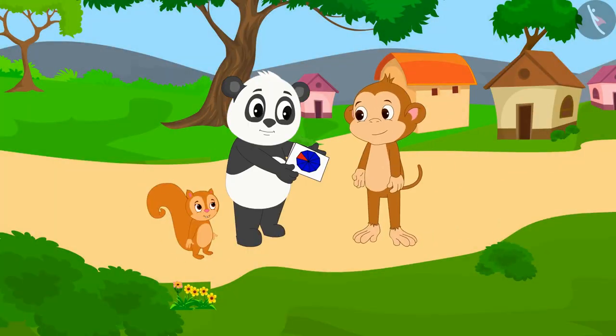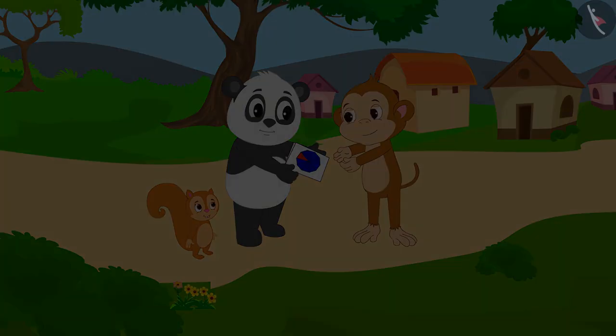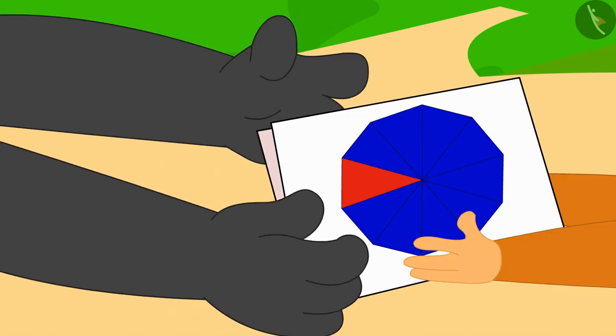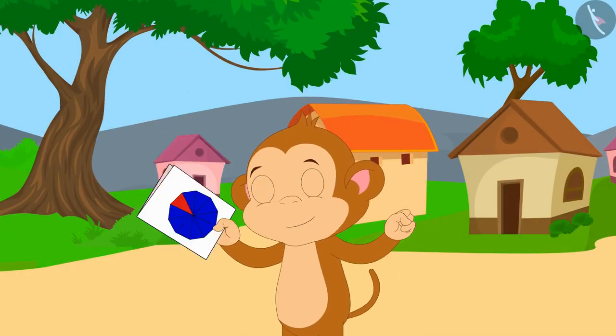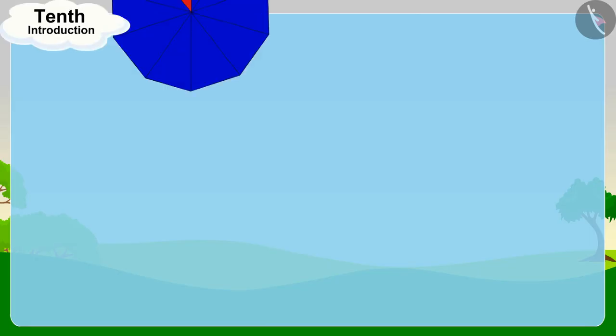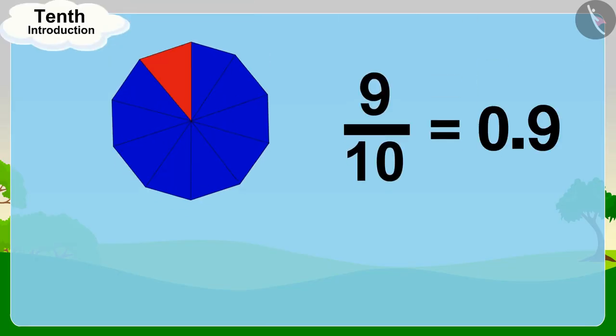Chanda and Golu were very happy. They immediately went and gave the greeting card to Babban. On receiving that beautiful greeting card, Babban started dancing happily. Children, in this video we learned about what is a tenth. In the next video we will learn more about it through some interesting examples.